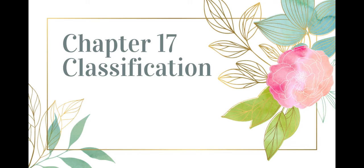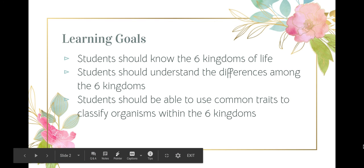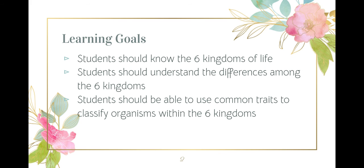Alright guys, so today we are doing Chapter 17, which is the Classification of Life. Before we get started, let's think about what our learning goals should be for the day. I want you to know and be able to define the six kingdoms of life. You should understand differences between and among our six kingdoms, and you should be able to use common traits to classify organisms, at least into the six kingdoms, if not further in, into a phylum or a class.